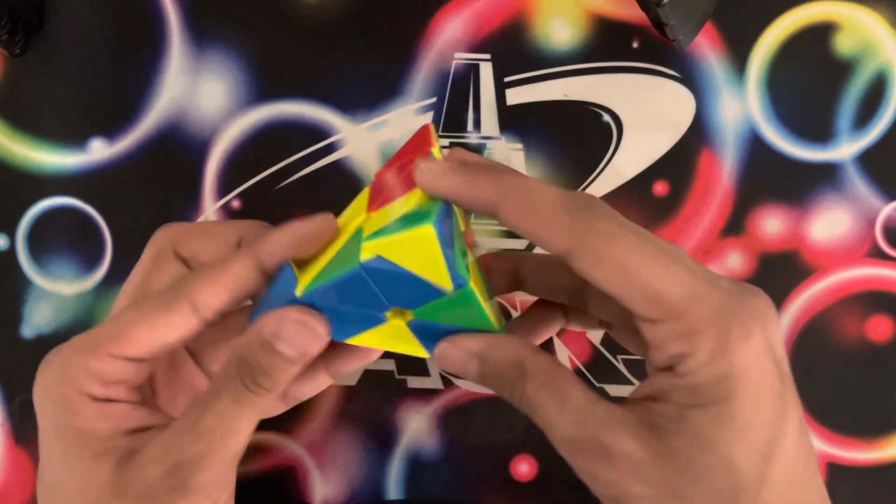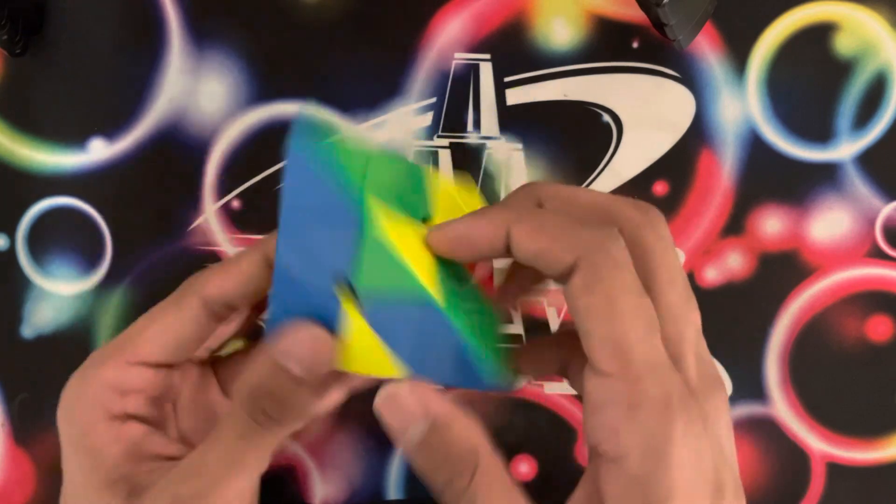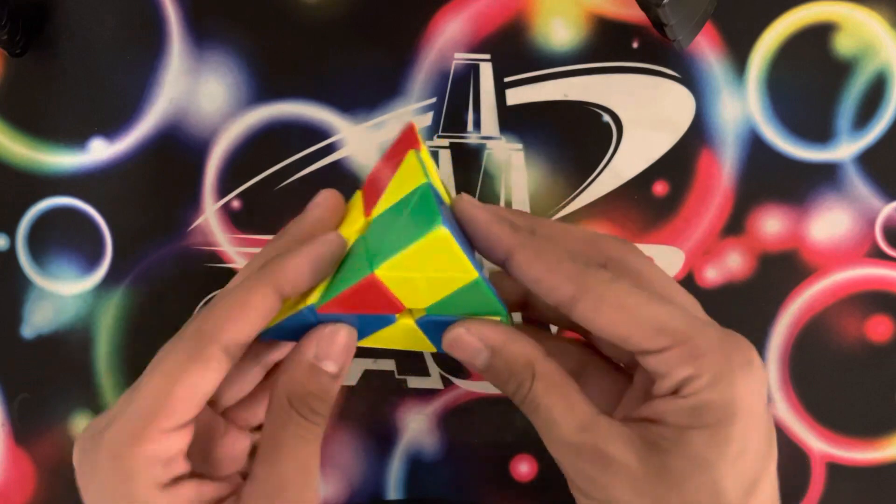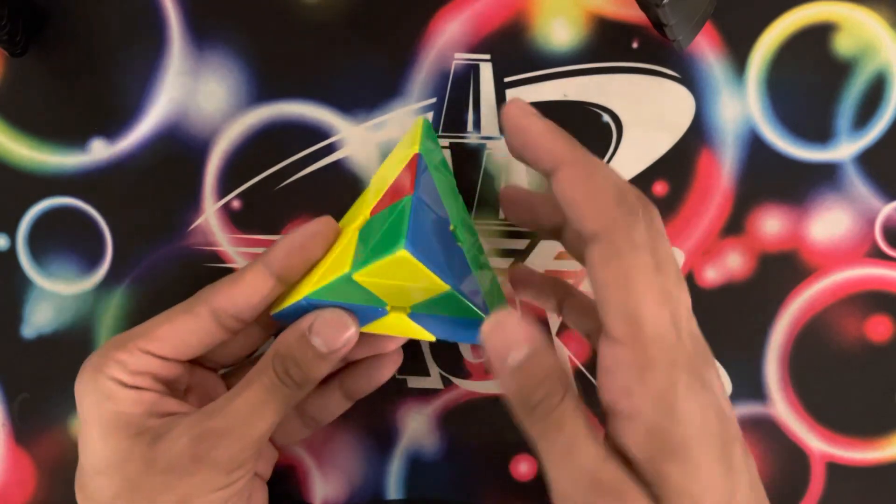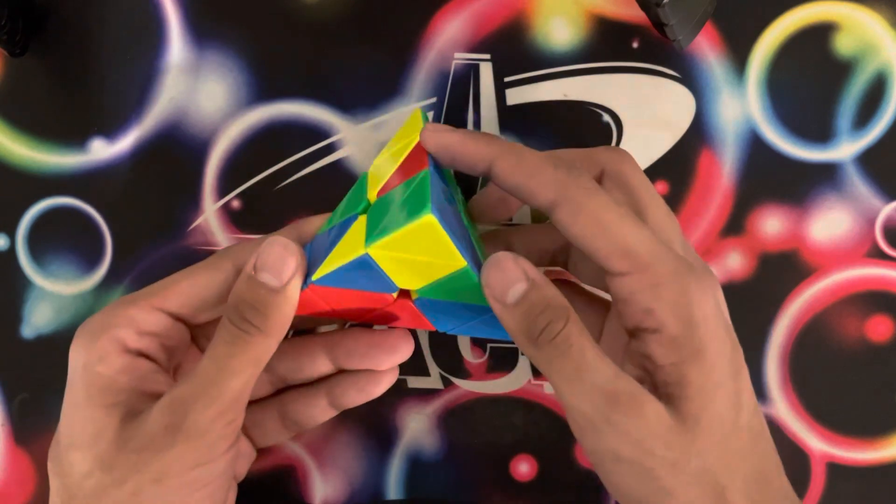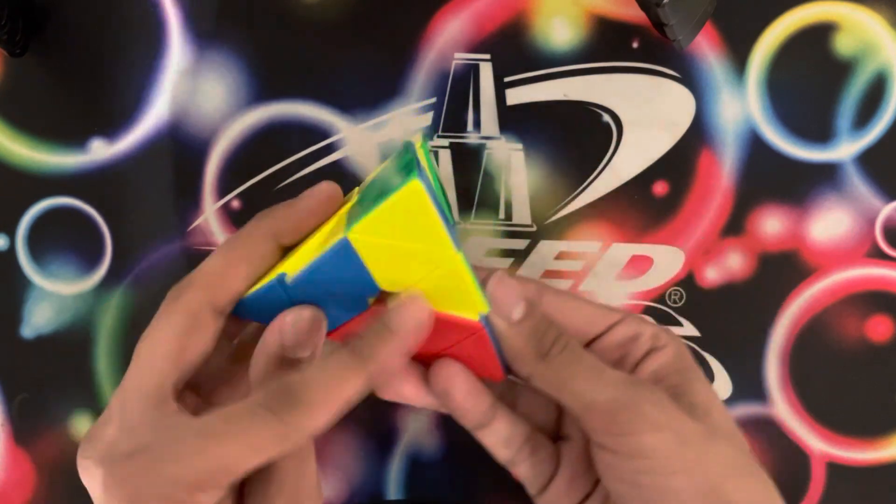I decided to go for a less optimal but more finger tricky solution: doing red with U prime L prime B L. And then you get this algorithm which is really spammy and you can cancel into it, which is what I did. So it just goes like that.